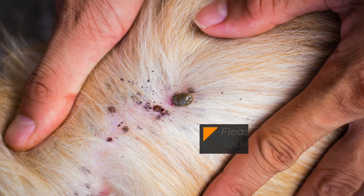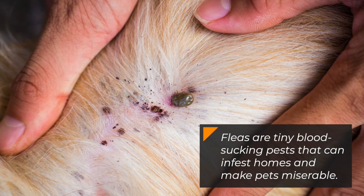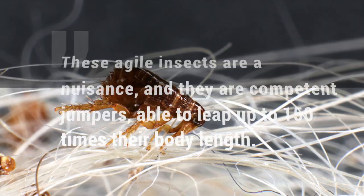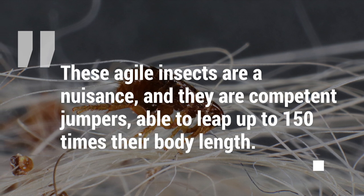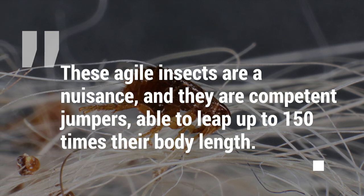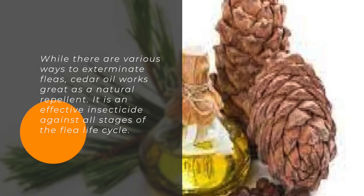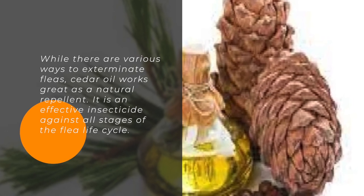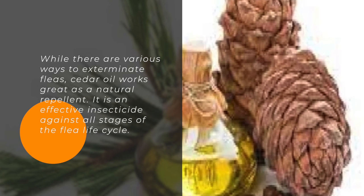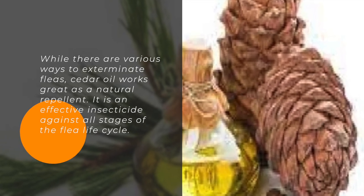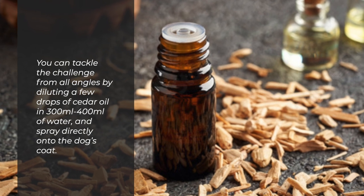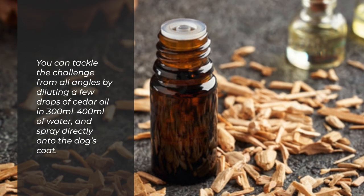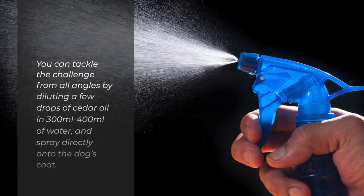Fleas are tiny blood-sucking pests that can infest homes and make pets miserable. These agile insects are a nuisance and they are competent jumpers, able to leap up to 150 times their body length. While there are various ways to exterminate fleas, cedar oil works great as a natural repellent. It is an effective insecticide against all stages of the flea life cycle. You can tackle the challenge from all angles by diluting a few drops of cedar oil in 300ml to 400ml of water and spraying directly onto the dog's coat.